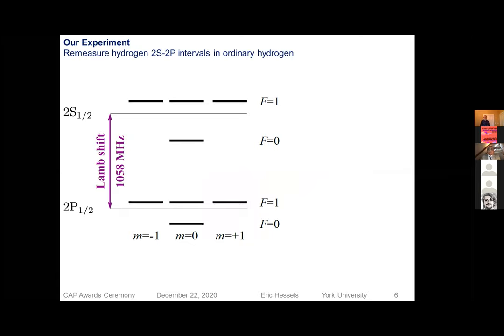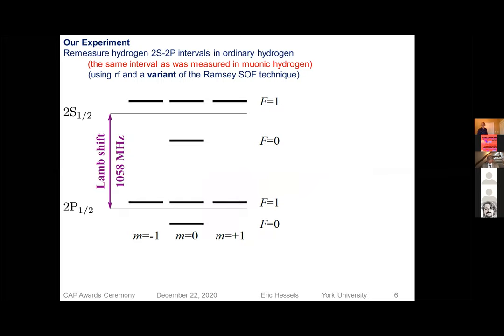This became known as the proton size puzzle. And there have been hundreds of papers written about how this might be resolved. Our contribution was that we decided to re-measure the 2s, 2p, this standard lambshift interval in ordinary hydrogen. This is the same interval that was measured in muonic hydrogen. So it's a direct analogy to the measurement that was recently done.